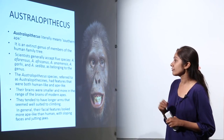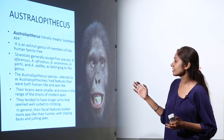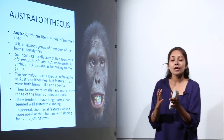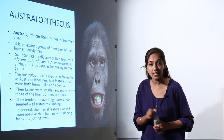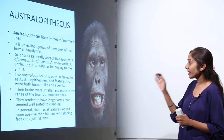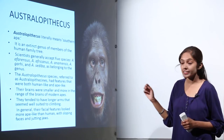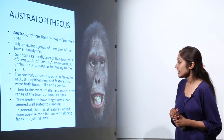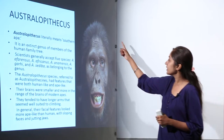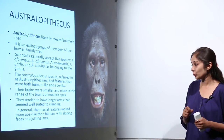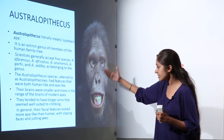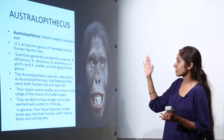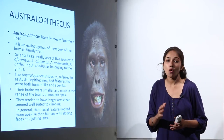Australopithecus species, referred to as Australopithecines, had features that were both human-like and ape-like. Their brains were smaller and more in the range of modern apes. They tended to have longer arms that seemed well suited to climbing. In general, their facial features looked more ape-like than human, with sloping faces and jutting jaws.